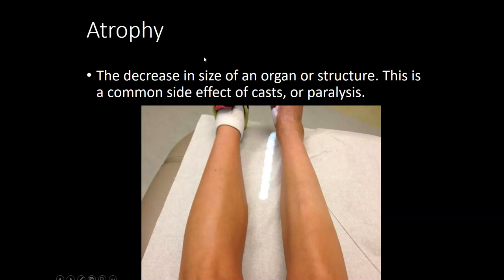Atrophy is a decrease in the size of an organ or tissue, usually as a result of disuse. A very common example is having a cast — if you have a cast on your leg and you're not allowed to bear weight, you're not stressing the bone and muscle anymore, and as a result it gets smaller and weaker over time. This is why many people need physical therapy after their cast is removed.